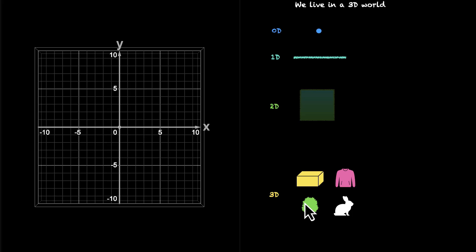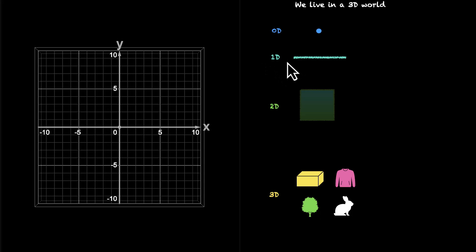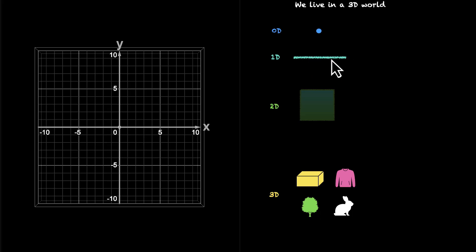Loosely speaking in math, dimensions give you the degrees of freedom — the number of perpendicular directions in which you can freely move. So when we talk about 1D objects, for example this line, we can only move along one direction. We can either move forward or backward, but this is the only direction that we have.